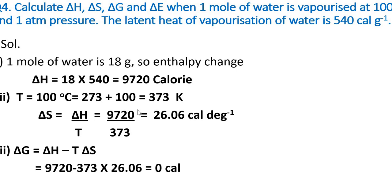Change in entropy equals change in enthalpy upon temperature, so ΔS = ΔH/T = 9720/373 = 26.06 cal deg⁻¹.